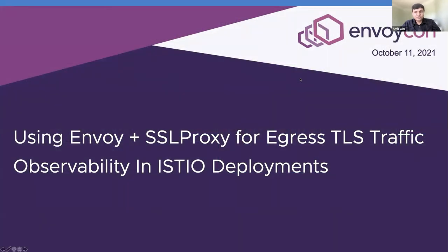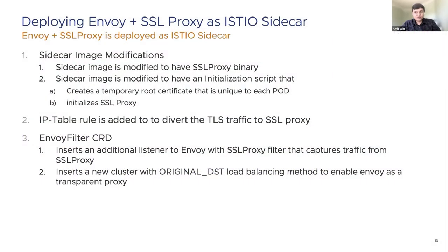Deploying the solution in the Istio environment required a few modifications to the Istio sidecar. First, the Istio sidecar image was modified to include the SSL proxy binary and associated scripts to set up and initialize SSL proxy. IP table rules were added for redirecting the application's TLS traffic to SSL proxy. Finally, we integrated with Istio's control plane to add a new listener in the OnWise sidecar proxy with the SSL proxy filter, and added a new cluster with the original destination load balancing method providing transparent proxy semantics.